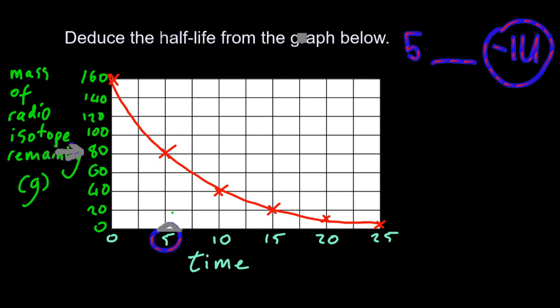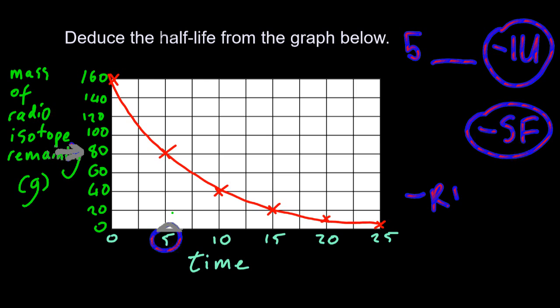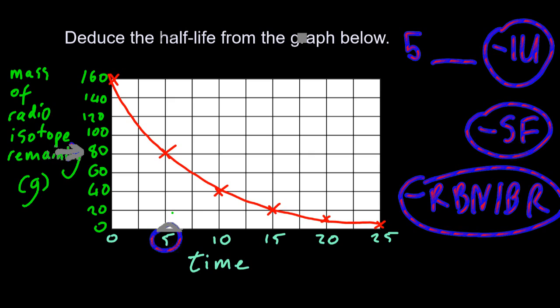Now the IB puts minus 1U on your paper if you forget to put the units in, but you can only lose one point maximum per paper. They also put minus SF if you screw up the sig figs in a question where it's needed. And again, you can only lose one point in IB for doing that, which is real, but not IB real. That's where you get the answer right, but the IB marks it wrong.